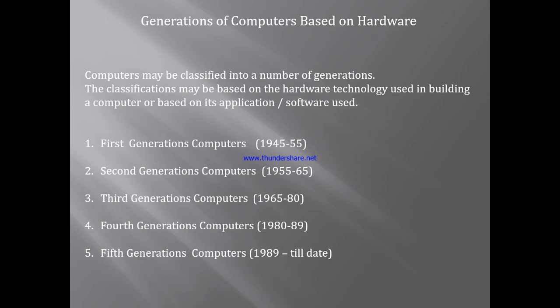जो topic आता है वो है generations — कौनसी generation में किस तरह का computer था। Generations of computers are based on hardware. Computers are classified into a number of generations; the classification may be based on hardware technology used to build a computer or based on its application and software. First generation: 1945–1955; Second generation: 1955–1965; Third generation: 1965–1980; Fourth generation: 1980–1989; Fifth generation: 1989 till date.